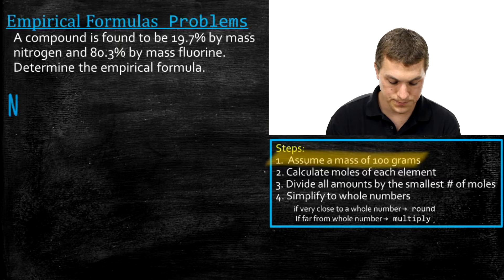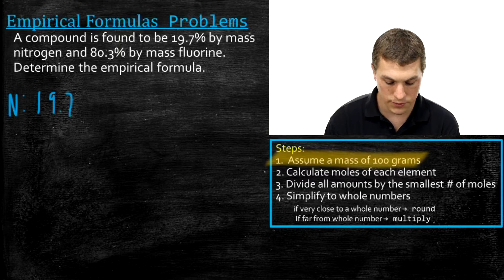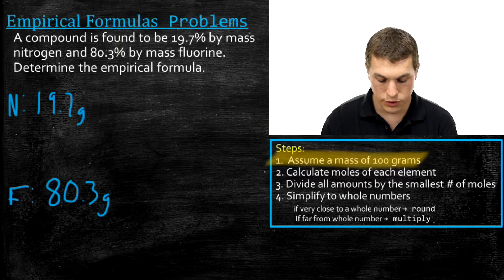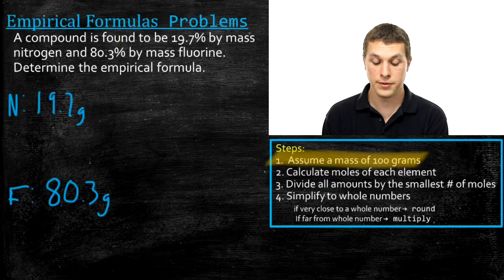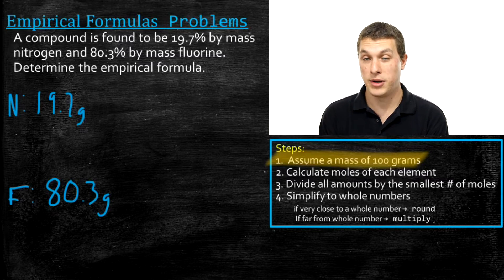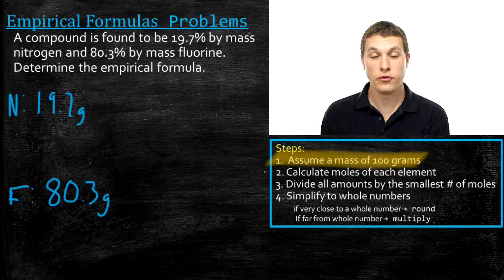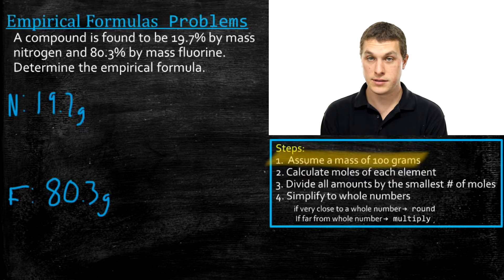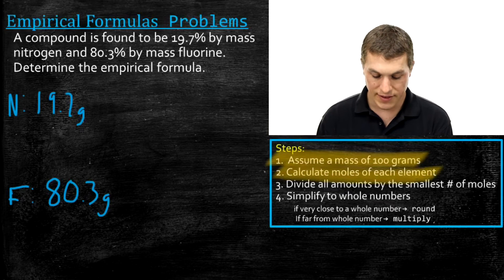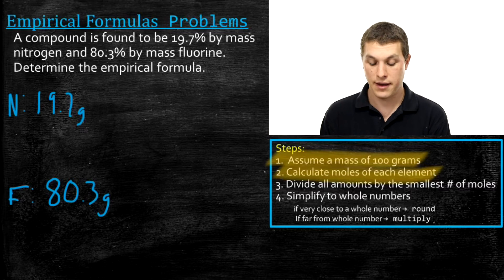So I'm going to write down that for nitrogen we have 19.7 grams and for fluorine we have 80.3 grams. We're just saying: let's pretend the total mass of our sample is 100 grams, so 19.7 grams is nitrogen and 80.3 grams is fluorine. The goal is to figure out how many atoms of each type there are. Mass alone doesn't tell us whether there's more nitrogen or fluorine — only the number of moles can tell us that. So step two is calculating the moles of each element.